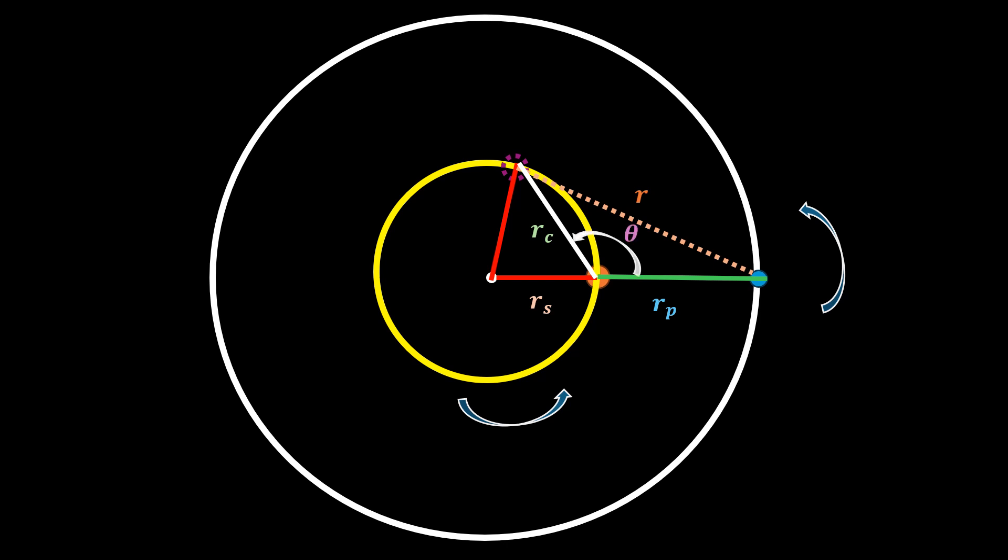Theta represents the angle between the positions of planet and star. That is, it measures the difference between the angle made by the chord of the star and the angle made by Rp, all measured from our reference horizontal line.